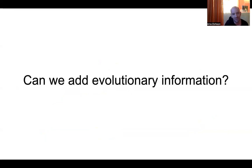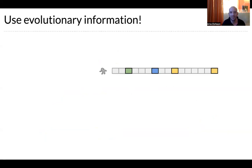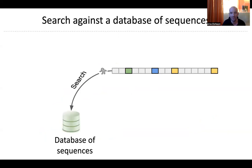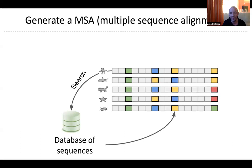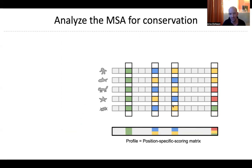However, evolution can come to our rescue here. If you take a sequence from some organism and search a database, you find homologous sequences in other organisms. These homologous protein sequences have very similar structures in most cases, and you can find patterns of mutations. In a multiple sequence alignment, some positions are completely conserved — which may mean they are functionally important, part of an active site, or internal and important for structure.